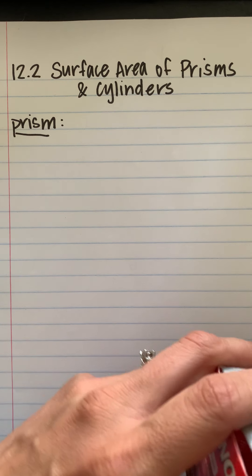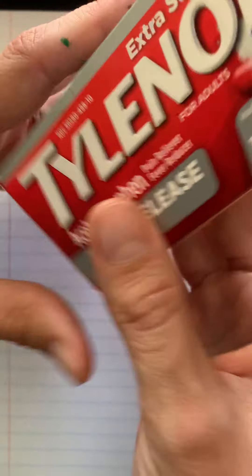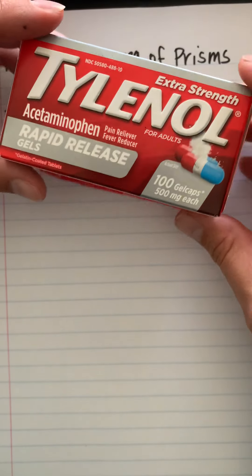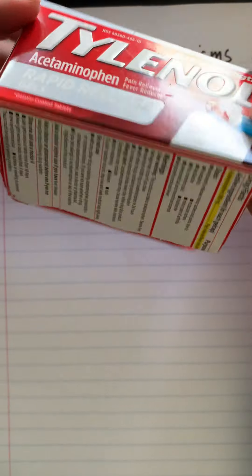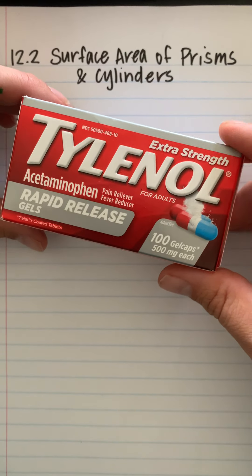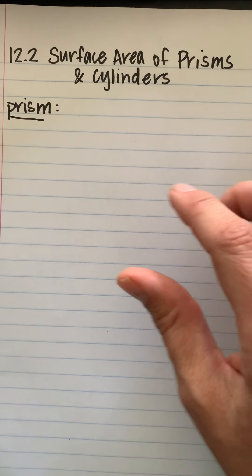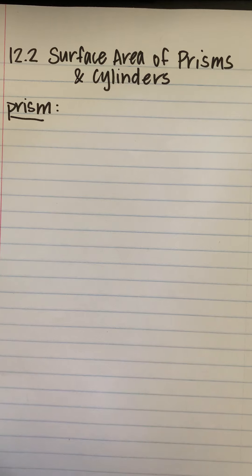We're going to talk about a prism, and that sounds like something really exciting — like we're going to be doing some magic with a prism. But really a prism is something you see all the time. I actually took this Tylenol box here — not because you guys give me headaches, but because it's a nice little box to cut up and it was one I had still intact. This is considered a prism. A prism is basically a three-dimensional shape — they call it a polyhedron — and it has two congruent faces. I'm going to write down what we know about a prism: two congruent faces.